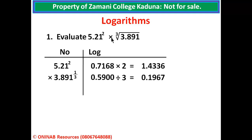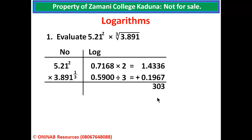Because of the multiplication, we are going to add the logarithms. Adding: 6 plus 7 is 13, write 3 carry 1; 3 plus 6 is 9, plus 1 carried is 10, write 0 carry 1; 3 plus 9 gives 12, plus 1 carried gives 13, write 3 carry 1; 4 plus 1 is 5, plus 1 carried is 6. Place the decimal point. 1 plus 0 gives 1.